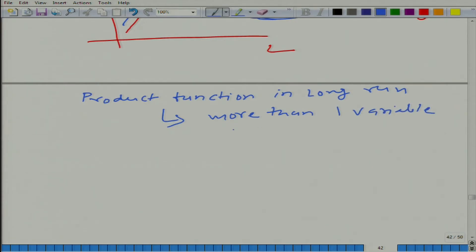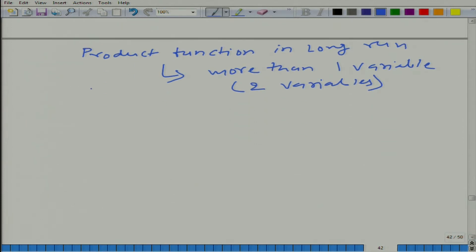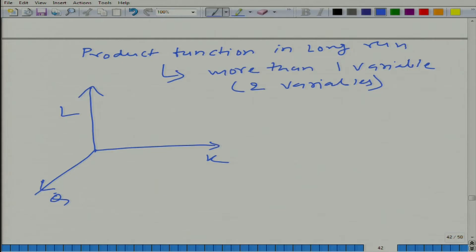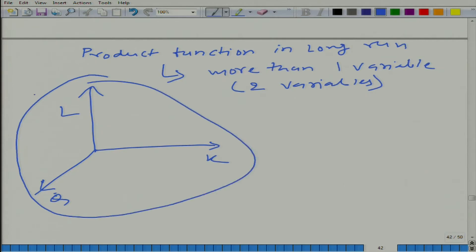In our particular case, we have two variables, K and L, which we have already talked about earlier. On the z-axis we will have Q, and it would be quite complex — though doable — to represent this visually in a three-dimensional graph.